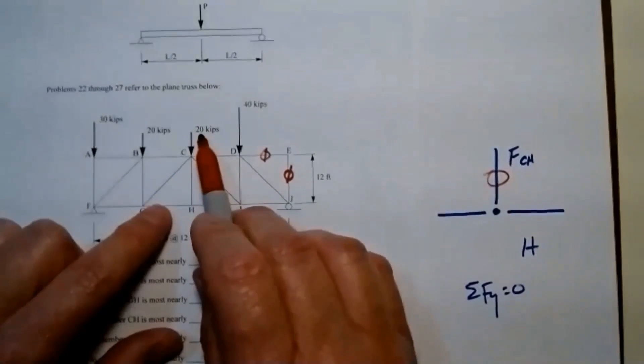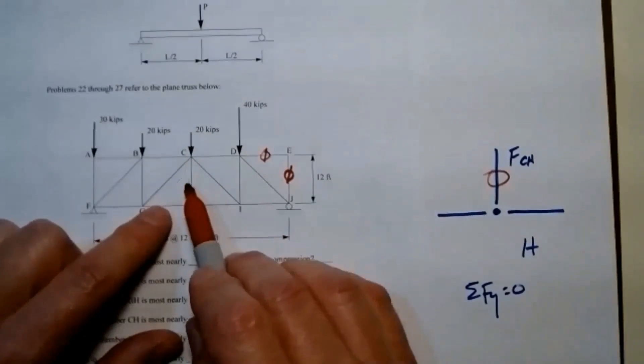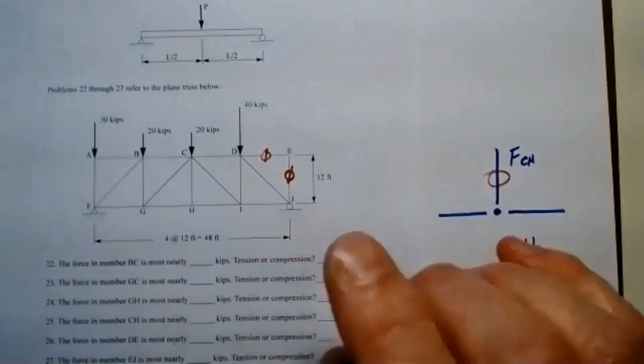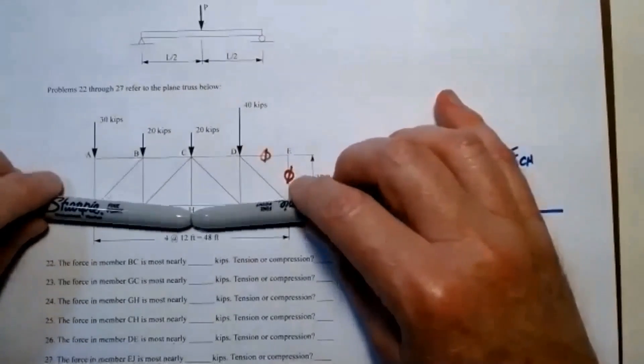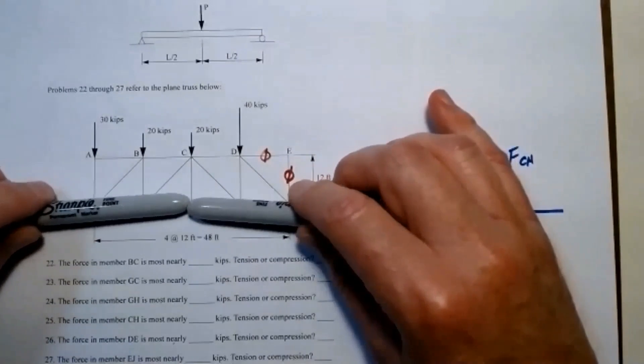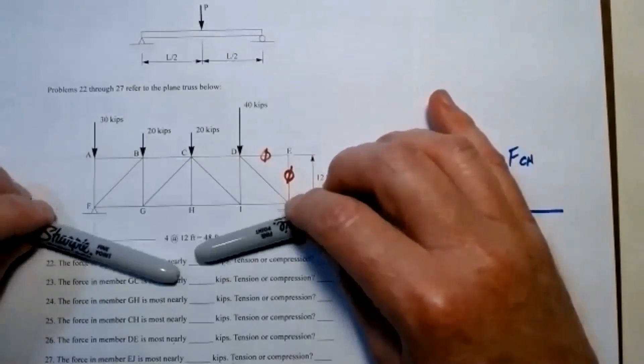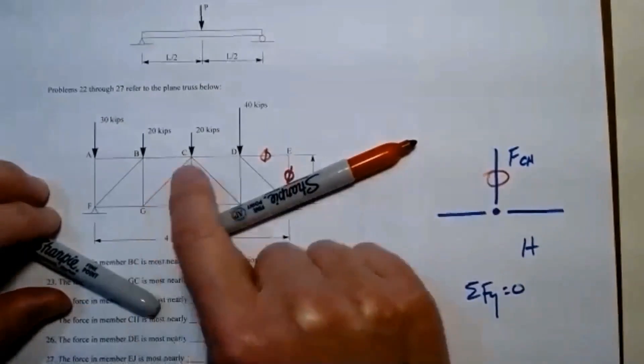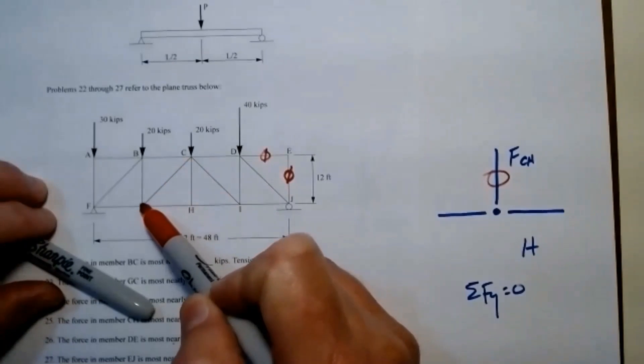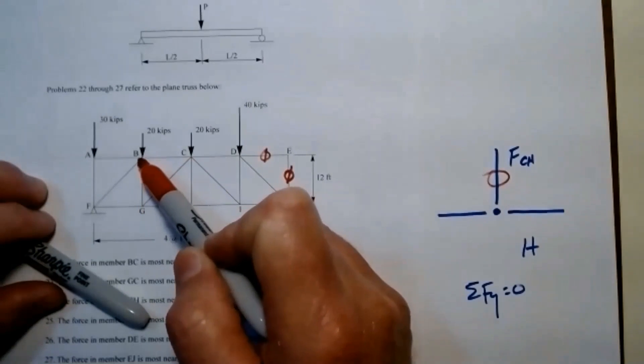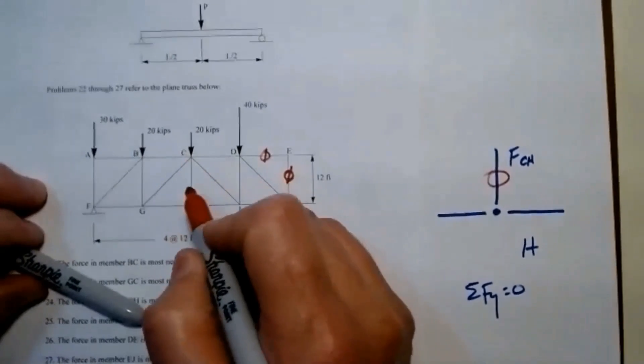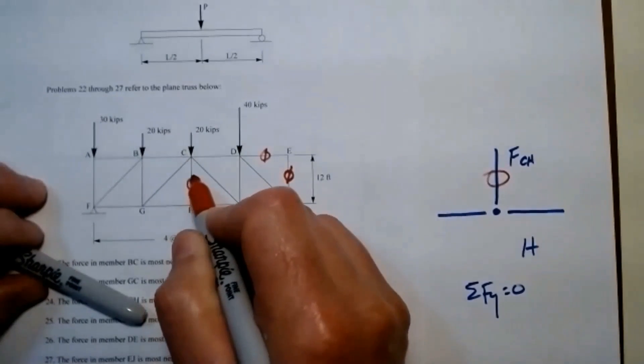If any of this 20 kips tries to go down this path, GH and HI cannot provide any resistance to it because they're just pin connected members. So they'll just give if that load tries to go that way. Instead, the forces are going to travel through those that are given a resistance. So they're going to go down this diagonal and then be brought up this vertical and then back down over to get to the support.